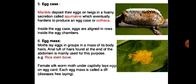The next type is the egg mass. Most moths lay eggs in groups as a mass covered with body hairs. The anal tuft of hairs found at the end of the abdomen is mainly used for this purpose. Example: rice stem borer. Moths deposit eggs in a group or as an egg mass, and these egg masses are covered in their body hairs. The anal tuft present at the tip of the abdomen serves this purpose.